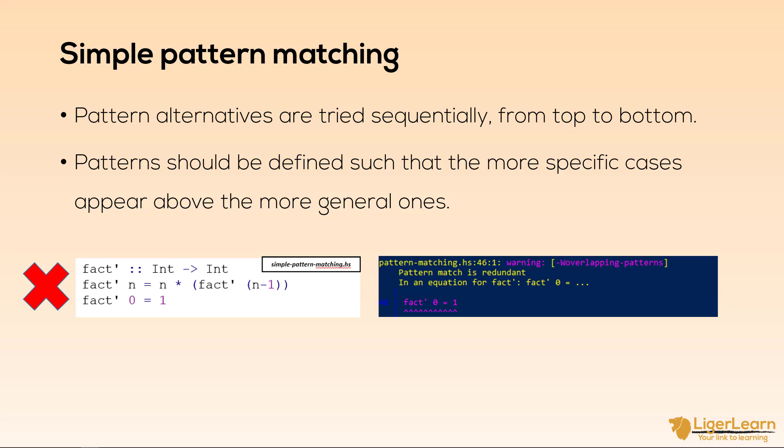When we try to load this in GHCI we actually get a warning which says that the second pattern match is redundant. This is because Haskell will go from top to bottom and the top will always match and so the second one is actually unreachable. You need to be aware of this so make sure that you write your code so that no situation like this occurs.